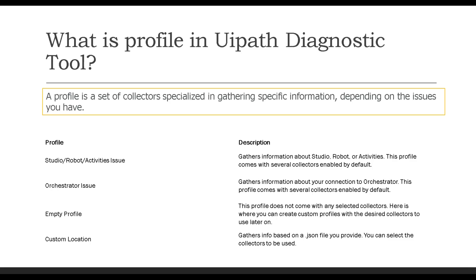What is a profile in UiPath Diagnostic Tool? A profile is a set of collectors specialized in gathering specific information depending on the issues you have. There are four profiles available: Studio/Robot/Activities issue, Orchestrator issue, Empty profile, and Custom location. If you are getting an issue related to Studio, Robot, or Activities, you can choose that profile, and it will ask you to select collectors.